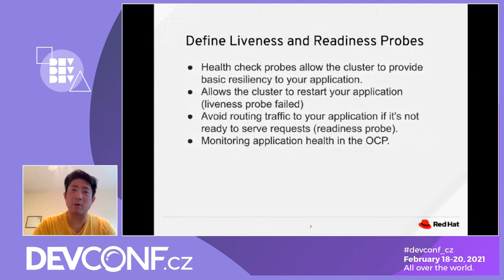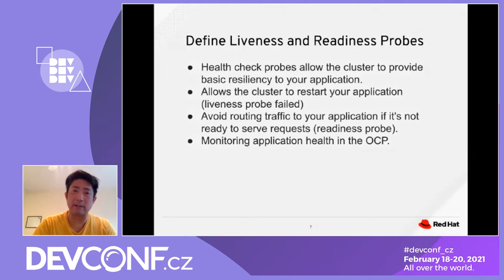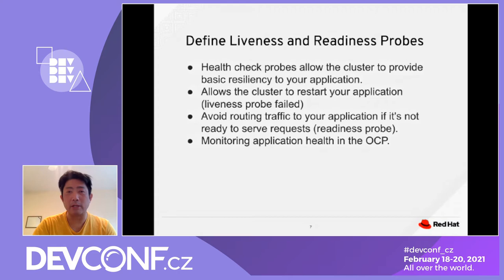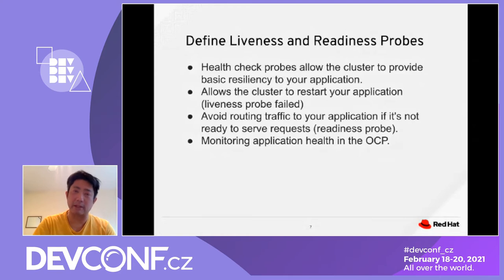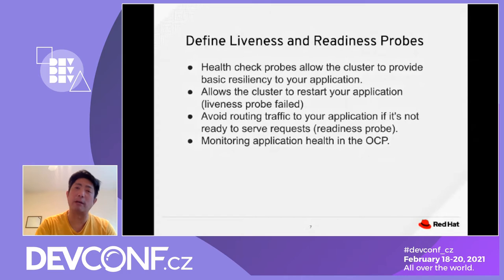Define the liveness and readiness probes. These probes come back to health checks. If we have a health check probe that allows us to check the cluster resiliency of the application, it's going to improve application quality. It also allows the cluster to restart your application when the liveness probe fails. We can avoid sending traffic to an application when it's not ready — when the liveness probe returns an unsuccessful status, stop traffic to that instance and redirect to another. This enables high availability and improves quality, and ties back to monitoring and health checking in OCP.